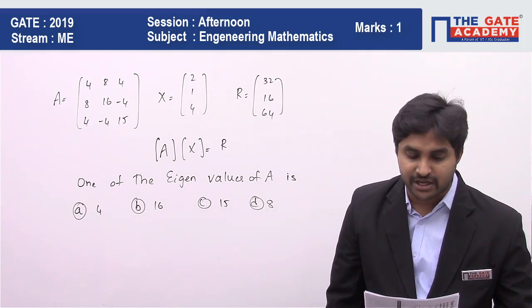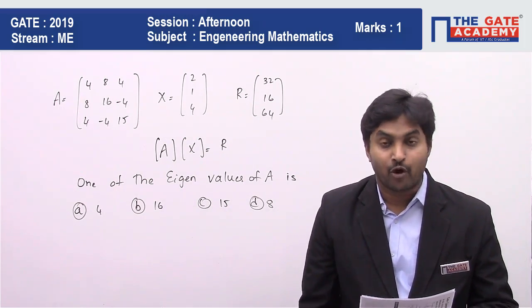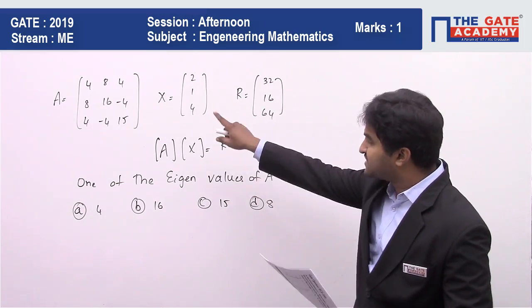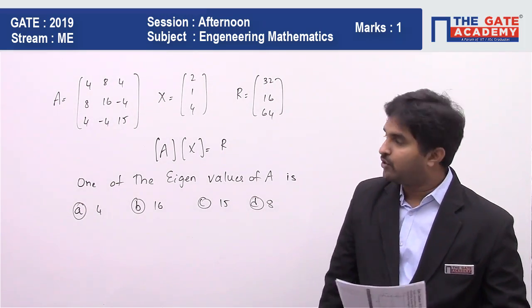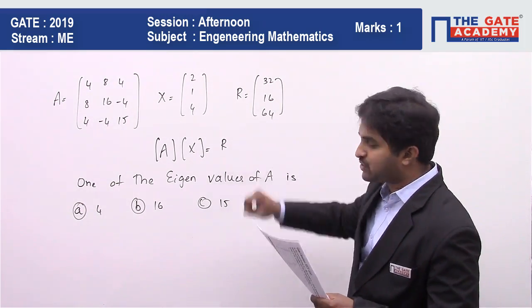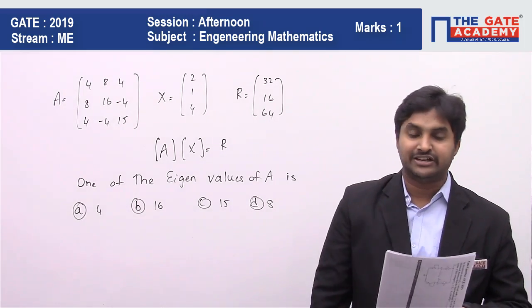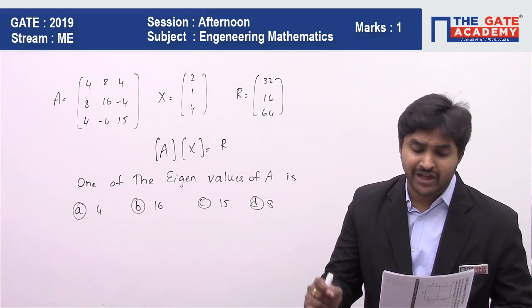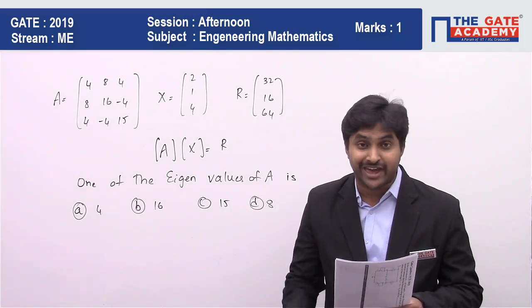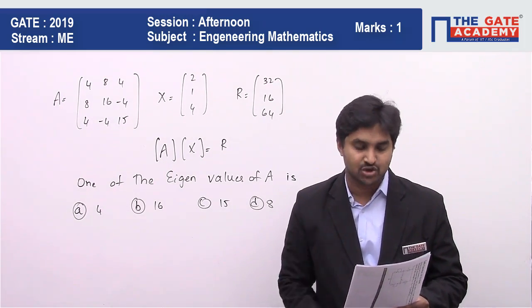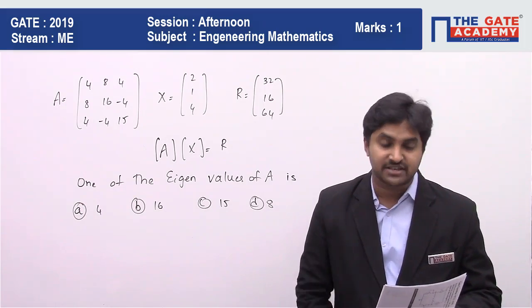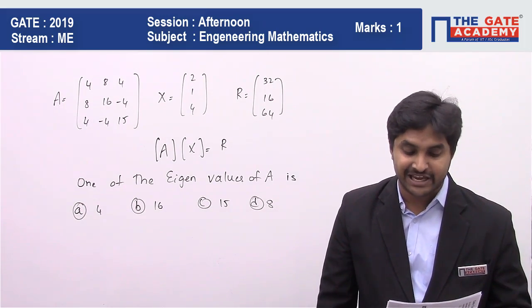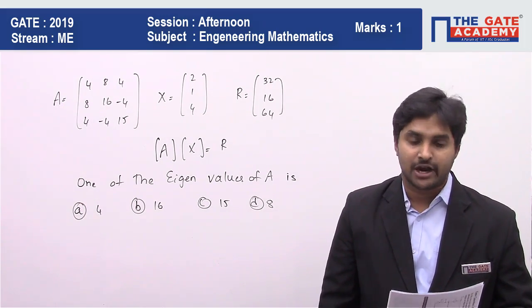x = [2, 1, 4] and r = [32, 16, 64]. One of the eigenvalues of A is: option A is 4, option B is 16, option C is 15, and option D is 8.